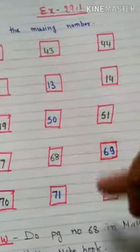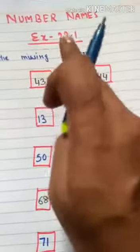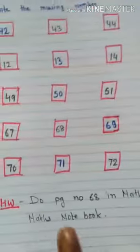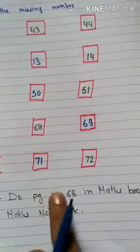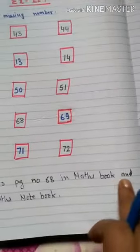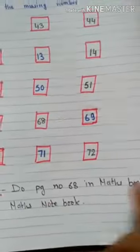So in this way you have to complete exercise 22.1. Homework: do page number 68 in your maths book and maths notebook. Thank you.